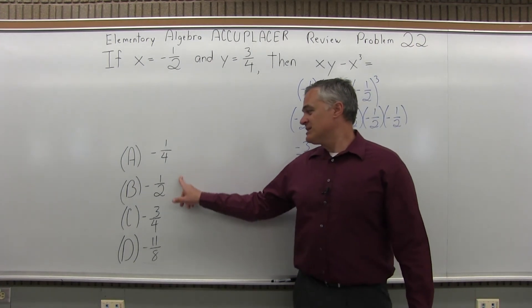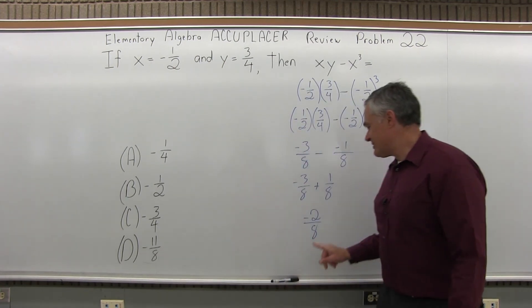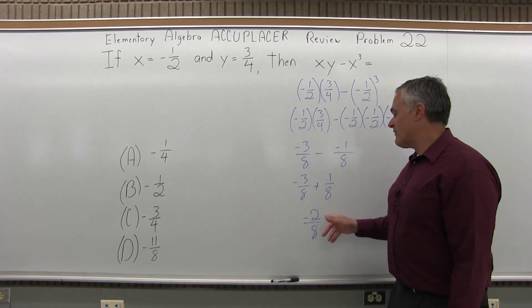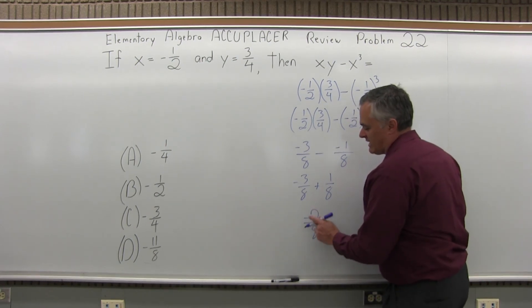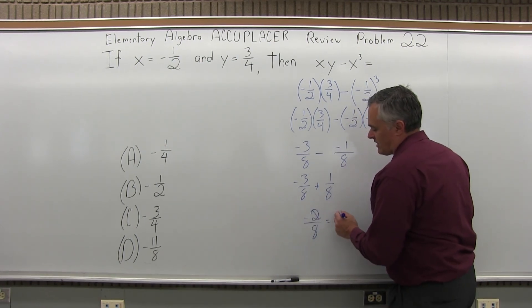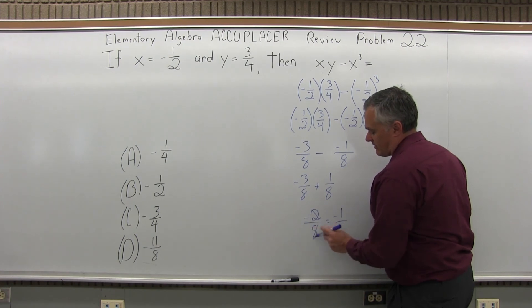And if I check my four options, none of them is negative two over eight. But if I reduce this, I will match it with one. Negative two is even, eight is even. So cut the negative two in half, I have negative one. Cut the eight in half, I have four. So it's negative one-fourth.